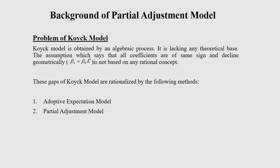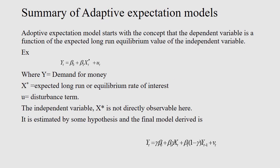Good morning all. In continuation with our discussion on distributed lag models, today we will be doing the partial adjustment model. As I have already discussed in my last class, adaptive expectation model and partial adjustment model are methods of rationalizing the Koyck model. There are certain drawbacks of the Koyck model. The Koyck model is obtained by an algebraic process; it is lacking any theoretical base, and the assumption that all coefficients are of the same sign and decline geometrically — that is, beta_k equals beta_naught times lambda to the power k — is not based on any rational concept.